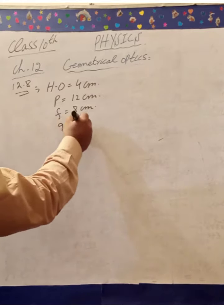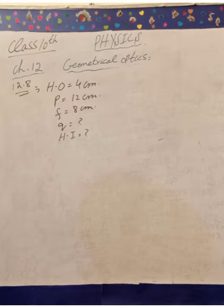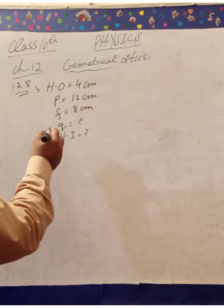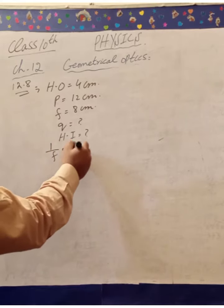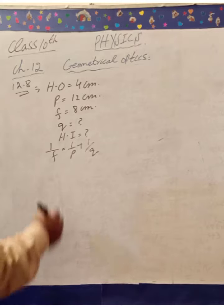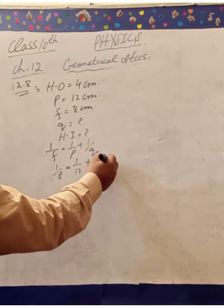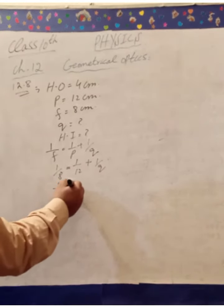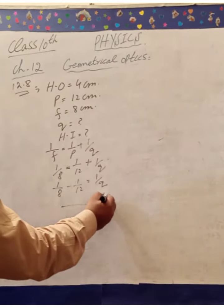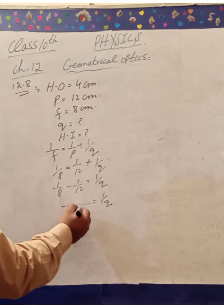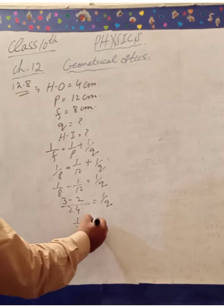We need to find Q and the height of the image. Using the lens formula: 1/F = 1/P + 1/Q. Rearranging: 1/Q = 1/F - 1/P. Substituting values: 1/Q = 1/8 - 1/12. Finding common denominator 24: 3/24 - 2/24 = 1/24, so Q = 24 centimeters.